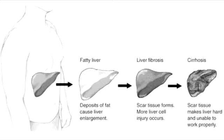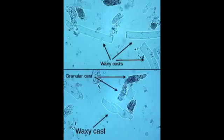What lab or diagnostic finding is observed in chronic end-stage renal disease? In chronic end-stage renal disease, there is waxy cast with very low urine flow.